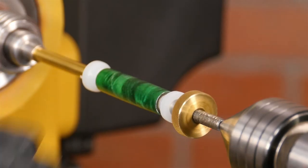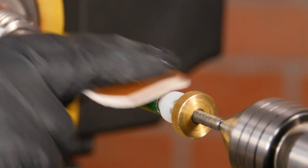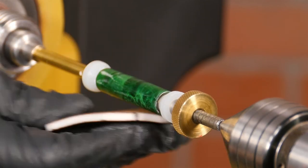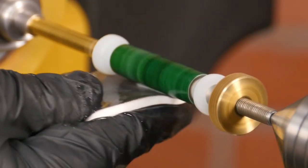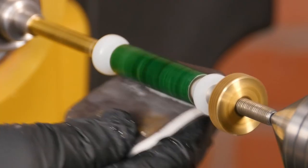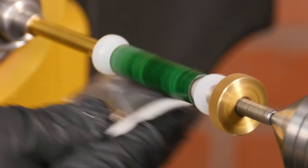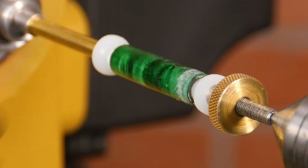Before moving on to the next grit, use the 1500 grit pad to sand laterally to get rid of any radial scratches caused by sanding on the lathe. Now continue the process using the same technique with each grit. Wet sand with very light pressure, then stop and sand laterally between each grit.